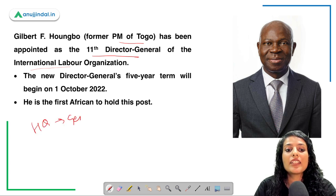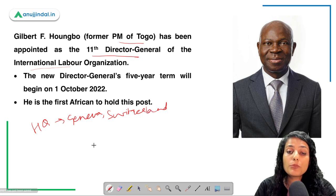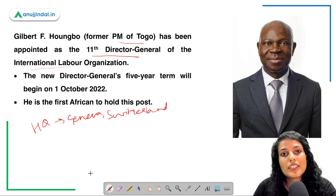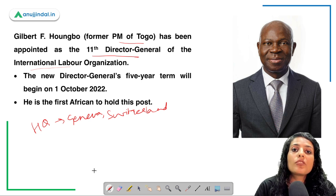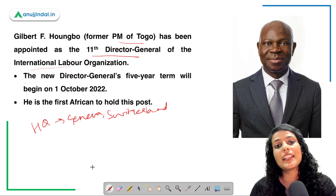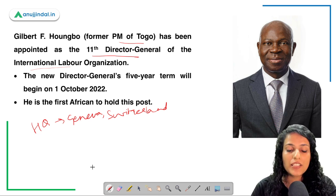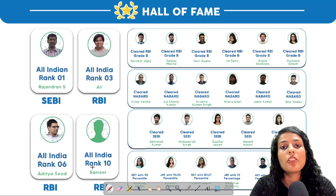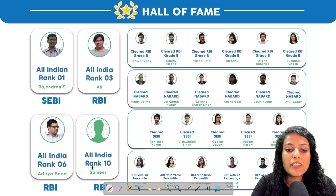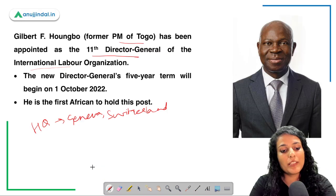The ILO headquarters are in Geneva, Switzerland. It is a major provider of international labour laws for most countries in the world. India is a signatory to this organization and has applied many ILO conventions — including those on child labour, migrant workers, and human trafficking. Thank you for watching today's video. Write any doubts in the comments below, keep practicing your tests, study well for your RBI Grade B exams, all the very best, take care and bye.